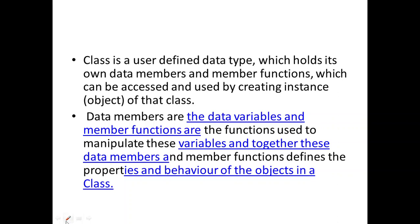A class is a user-defined data type. In addition to data, it can hold some functions as well. That's why a class creates a partitioned memory area for data and functions, where the data is known as data members and the functions are known as member functions. The data can also be stored in a private manner so that the data can be hidden, and the class is accessed by creating an object.